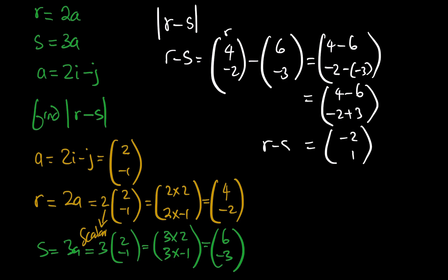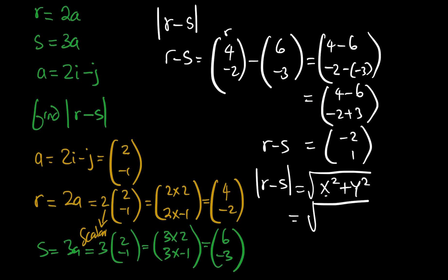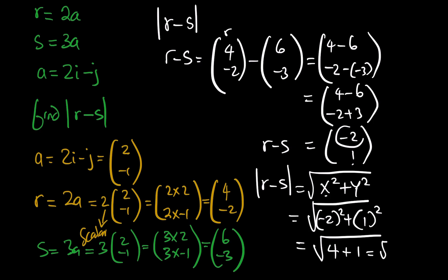To find the magnitude of r − s: square root of x-squared plus y-squared. The x-component is negative 2, squared gives 4; the y-component is 1, squared gives 1. So the magnitude is square root of 4 + 1 = square root of 5.